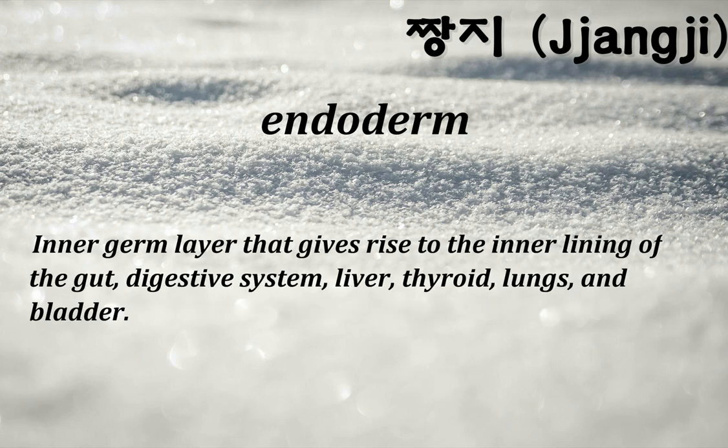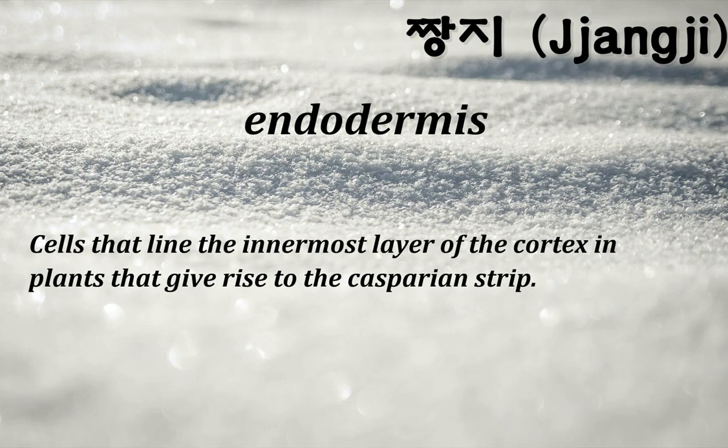Endoderm: inner germ layer that gives rise to the inner lining of the gut/digestive system, liver, thyroid, lungs, and bladder. Endodermis: cells that line the innermost layer of the cortex in plants that give rise to the Casparian strip.